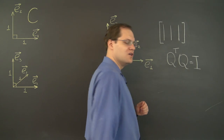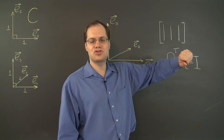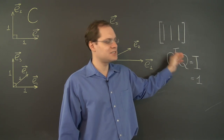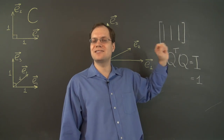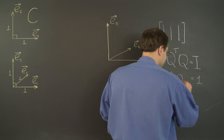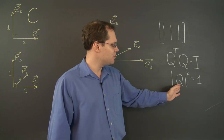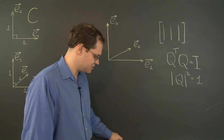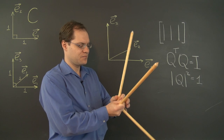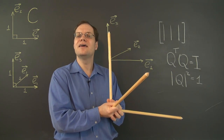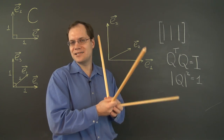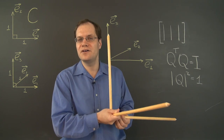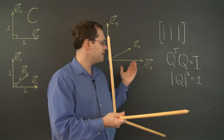Since Q-transpose times Q equals the identity, taking determinants of both sides: the determinant of Q-transpose times the determinant of Q equals 1. Since the determinant of Q-transpose equals the determinant of Q, we get the determinant of Q squared equals 1, so the determinant of Q is either plus 1 or minus 1. This gives the algebraic definition: if the determinant is 1, the basis is right-handed or positively oriented; if minus 1, it's left-handed or negatively oriented.